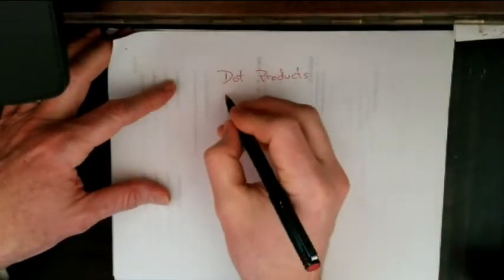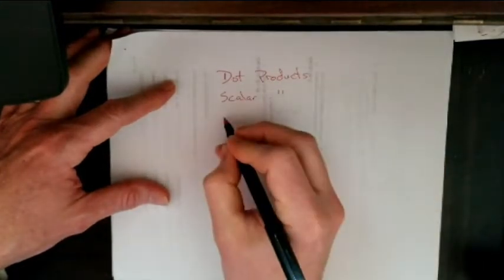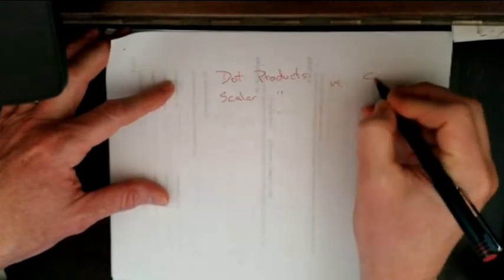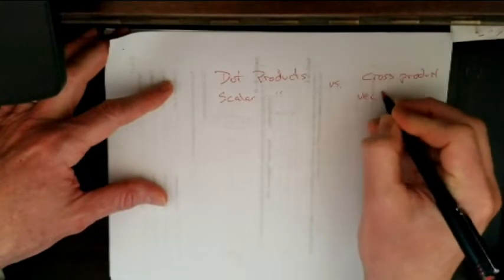There's dot products and there's cross products. Dot products are also called scalar products because the final answer is a scalar, versus the cross product, also known as a vector product.